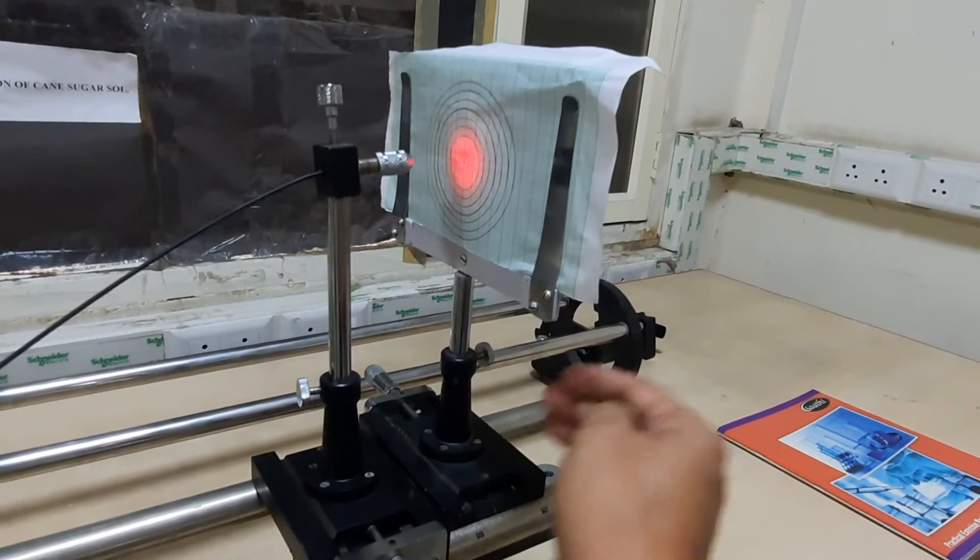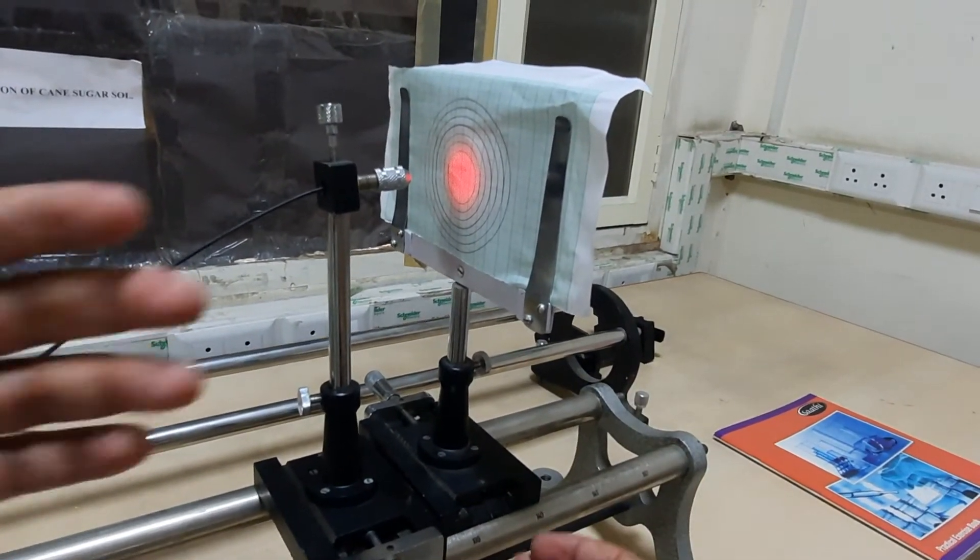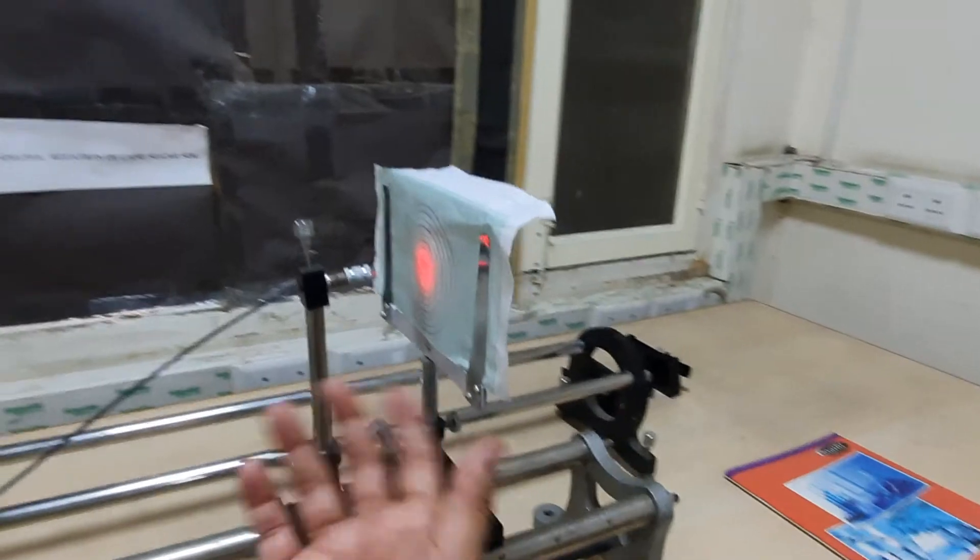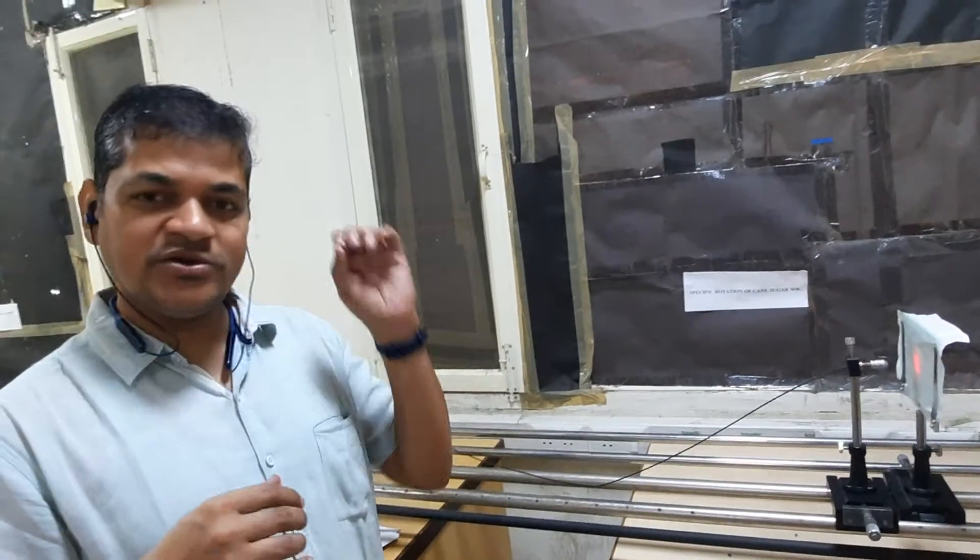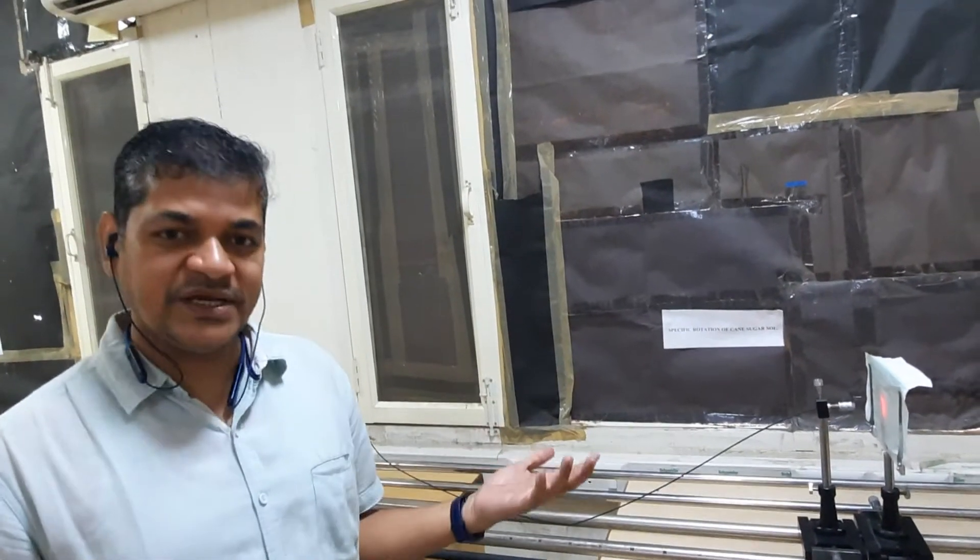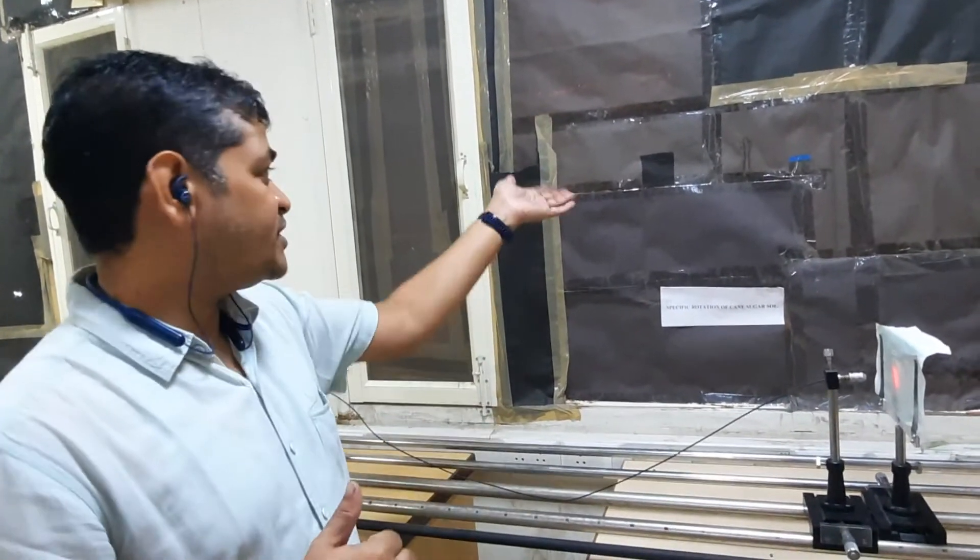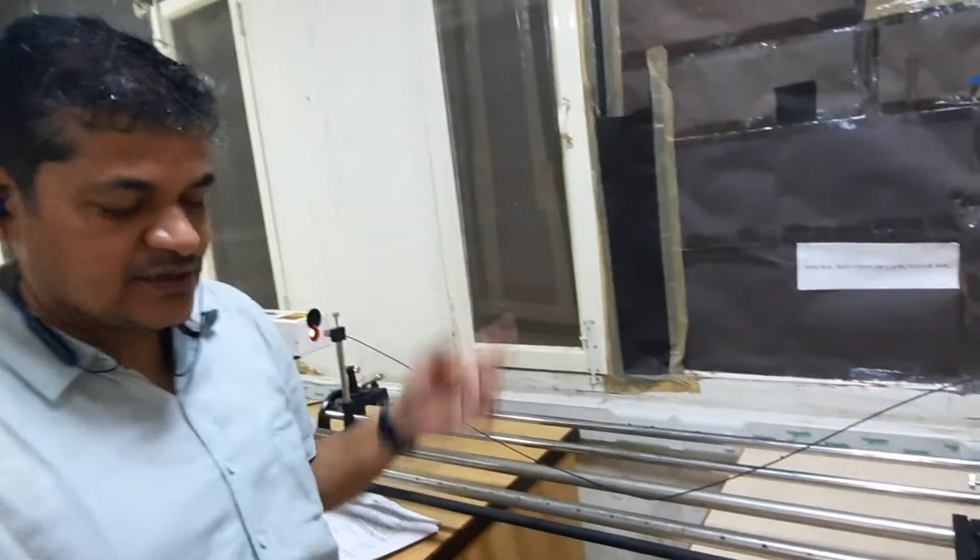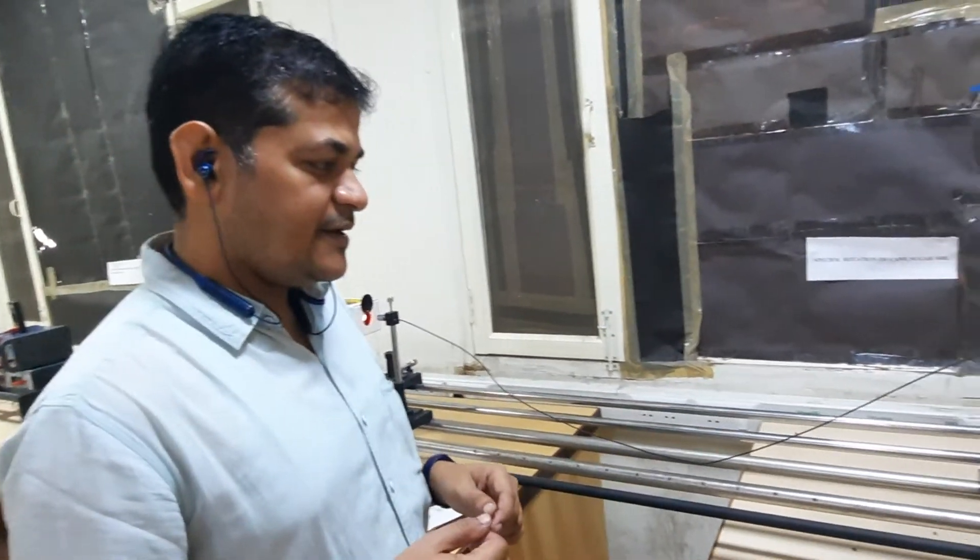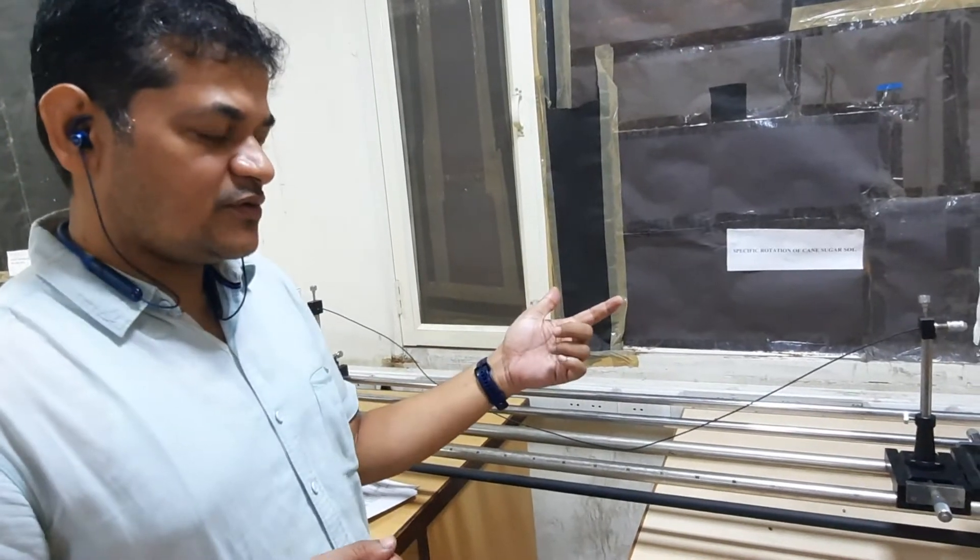Now here because light is there during the experiment, the whole room will be made dark and that's why this black thing are there around so that no light also comes in from the outside.